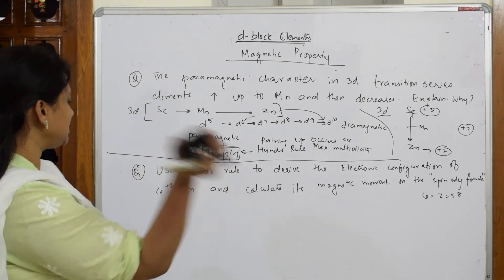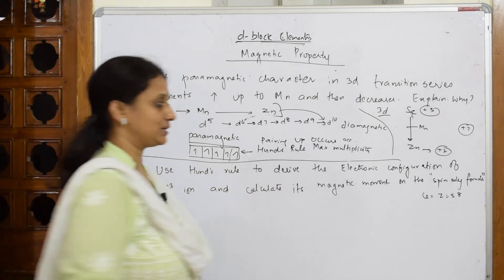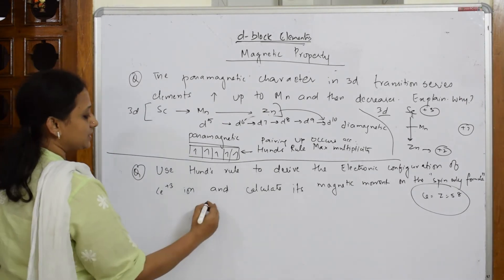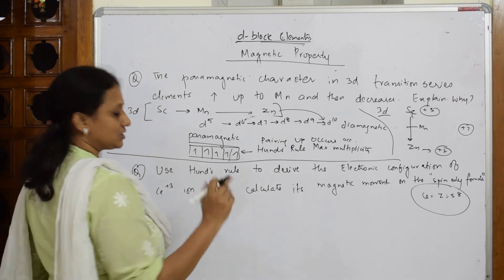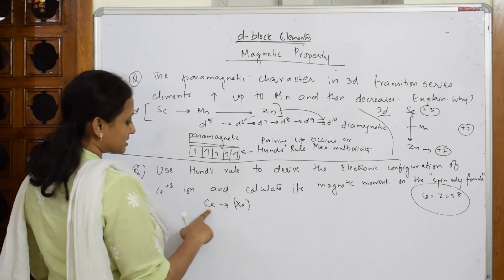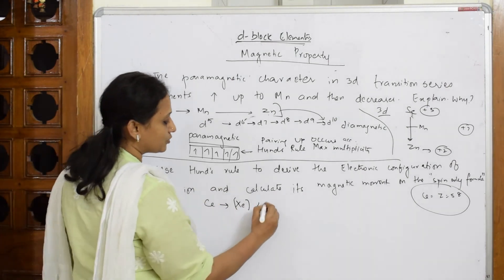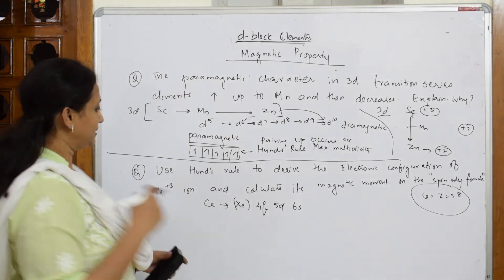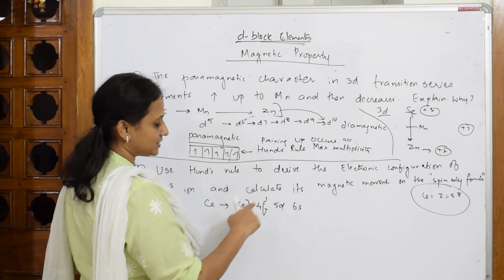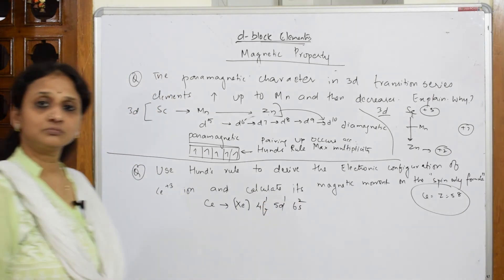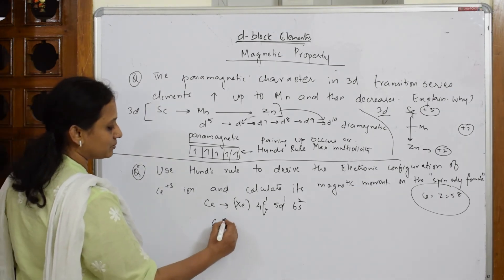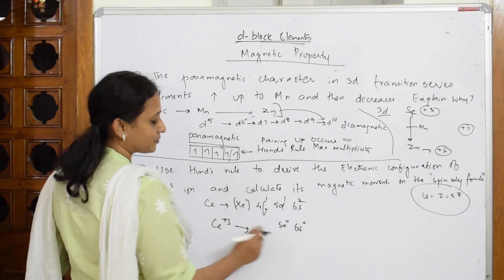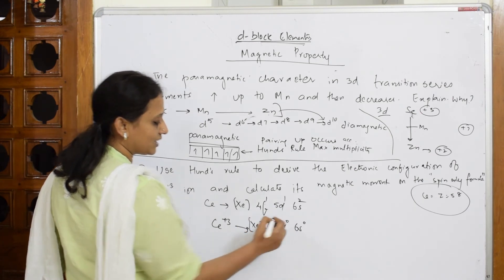The next question asks us to use Hund's rule to derive the electronic configuration of the Ce³⁺ ion and calculate the magnetic moment. Cerium has atomic number 58. The configuration is written starting from the xenon core, with electrons entering 4f: [Xe] 4f¹ 5d¹ 6s². To form Ce³⁺, remove two electrons from 6s (→ 6s⁰) and one from 5d (→ 5d⁰), leaving [Xe] 4f¹.